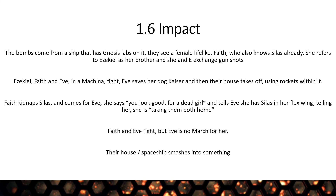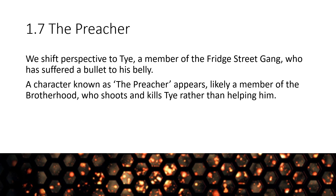The house-spaceship smashes into something. Then we switch perspective to Ty, who is a leader or member of the Fridge Street Gang — he's got a bullet in his belly. We meet a character called the Preacher, assumed to be a member of the Brotherhood, who looks religious and has a copy of the Good Book in his breast pocket. Ty says 'thank God, Father, you can help me,' and then the Preacher shoots Ty dead. And that's the end of part one, with part two next.